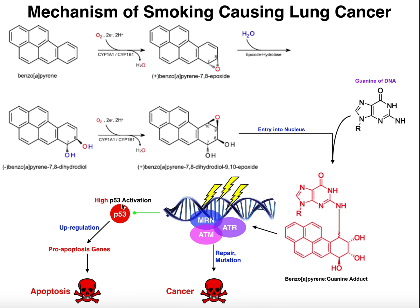p53 becomes activated when you have DNA damage. When you have a high degree of p53 activation, it's ultimately going to trigger apoptosis and you'll have cell death. High degrees of p53 activation tell the cell that there's so much DNA damage that it would rather commit suicide to prevent mutations from going into future cell lines than risk being alive. So the cell will rather commit suicide than potentially mess up the entire organism or future cell generations, and high p53 activation triggers the upregulation of genes that promote apoptosis, ultimately resulting in death of those cells.